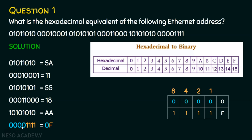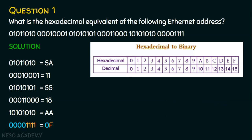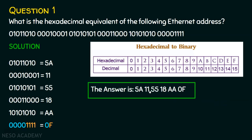The last byte is 0F. How did we get 0F? The first half is all zeros, so obviously it is 0. The second half is all 1s: 8 plus 4 plus 2 plus 1 equals 15. The decimal number 15 has a hexadecimal equivalent of F. So the answer to question 1 is 5A 11 55 18 AA 0F.